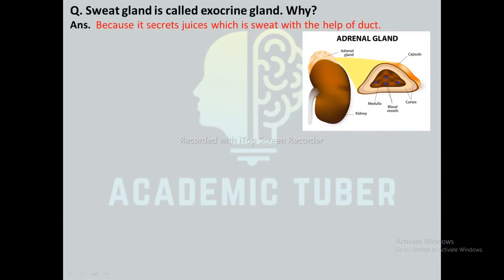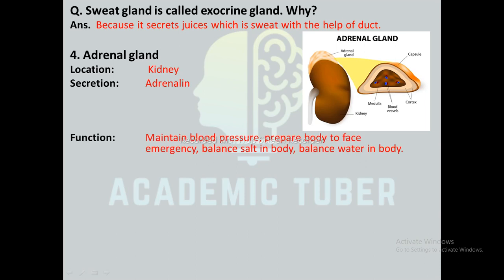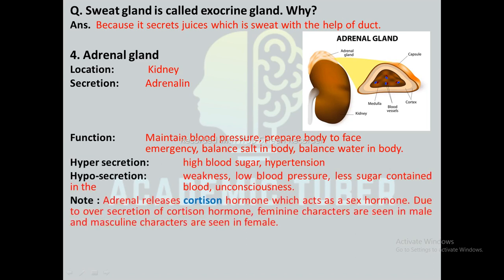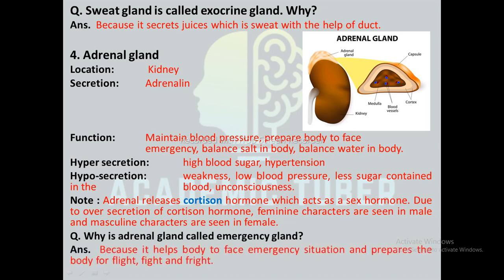The sweat gland is called an exocrine gland because it secretes juice with the help of a duct. Adrenal gland: here is a diagram showing the adrenal gland. It is located on the kidney. Its secretion is known as adrenalin, and the function of adrenalin is to maintain blood pressure, prepare the body to face emergencies, and balance salt and water in the body. Hypersecretion of adrenalin causes high blood sugar and hypertension, whereas hyposecretion causes weakness, low blood pressure, low blood sugar, and unconsciousness. Sometimes the adrenal gland releases a hormone known as corticin, which acts as a sex hormone. Due to over-secretion of corticin, feminine characteristics are seen in males and masculine characteristics are seen in females. The adrenal gland is known as the emergency gland because it prepares the body for flight, fright, and fight.